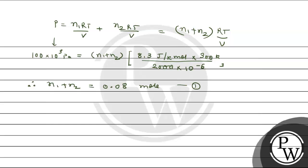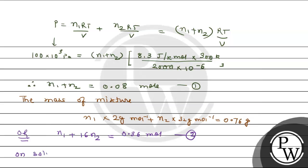Now we'll calculate the mass of mixture. The mass of mixture is N1 into 2 gram per mole plus N2 into 32 gram per mole equals 0.76, or we can write this equation as N1 plus 16 N2 equals 0.38 mole. This is equation 2. On solving equation 1 and equation 2...